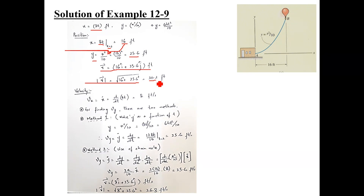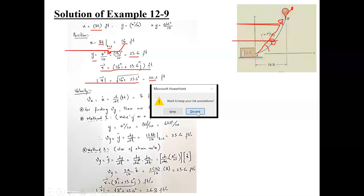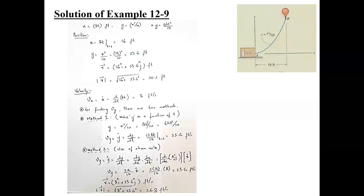Because it's 2D, you can find theta using tan-inverse of y over x — that is, tan-inverse of 25.6 over 16 — to get the direction of this position vector in the x-y coordinate system. Otherwise, you can also define the unit vector u_R, which is R-vector divided by its magnitude. I hope there is no doubt about the position.